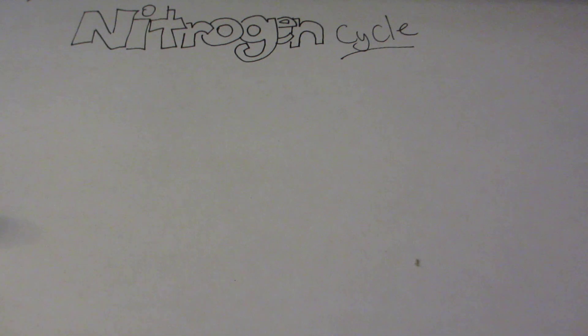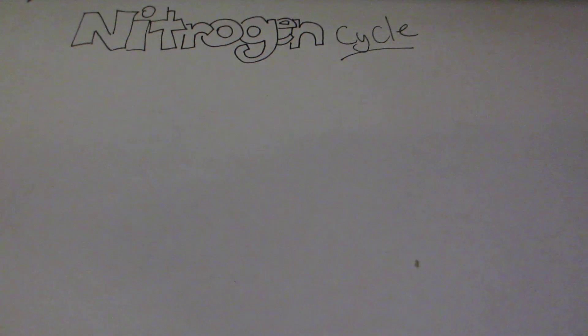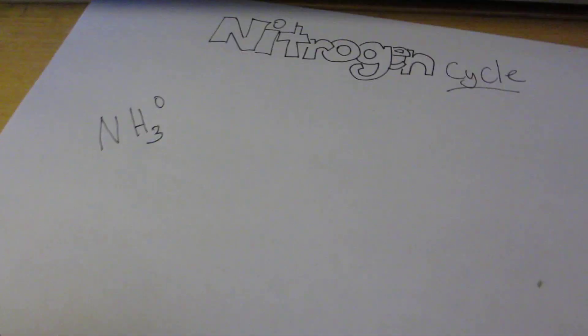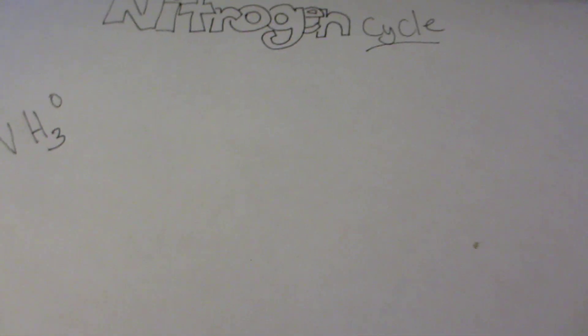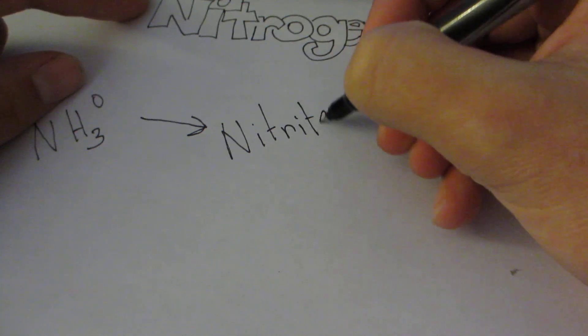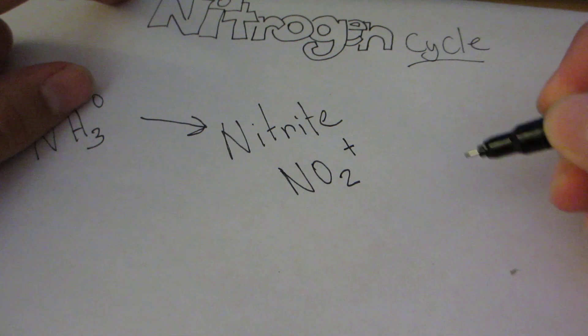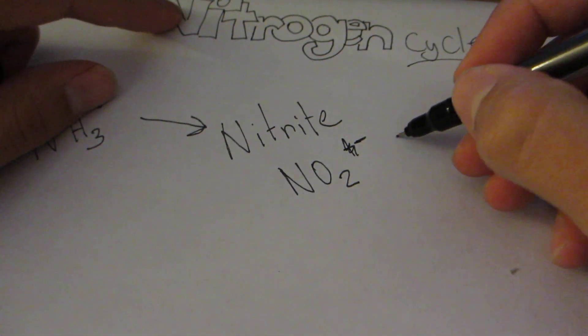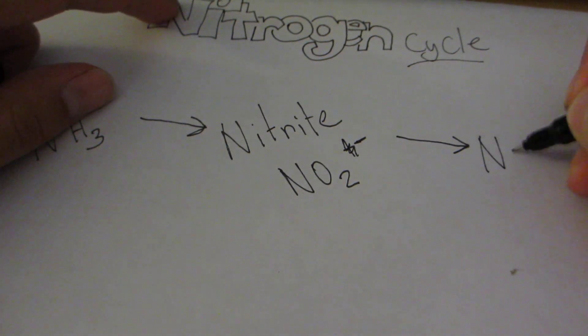You're going to need to know a couple things. You need to know ammonia, which is NH3 with zero charge. You're going to need to know nitrite, NO2 minus, and you need to know nitrate, NO3 with a negative charge.